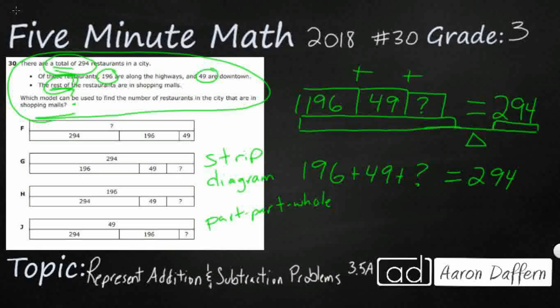If we're wanting to find the number of restaurants in the city that are shopping malls, we can start with this and we can use some different equations that use inverse operations, fact families. But we are looking at strip diagrams. So in a strip diagram, this is the number one thing we need to remember: when we're looking at a strip diagram, the whole or the total, if that's given to you and one of the unknowns is actually a part, the whole always goes up on top.